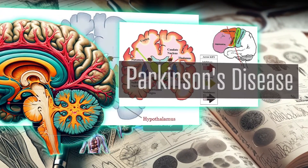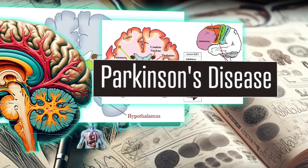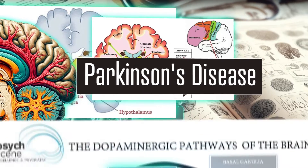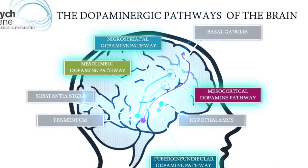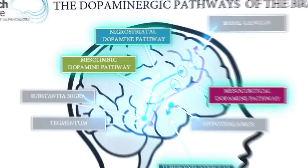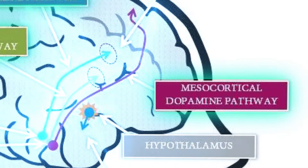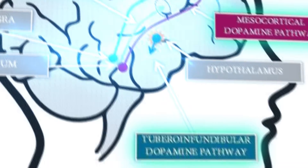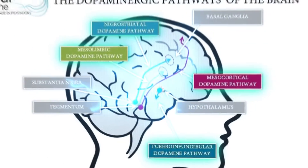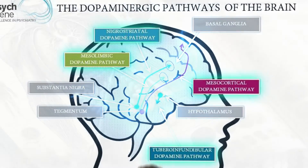Let's expand this map further. The substantia nigra is associated with Parkinson's disease, focusing on dopaminergic pathways — the mesolimbic, the mesocortical, the nigrostriatal, the tuberoinfundibular, and so on. You can see how questions can be formed on any of these different aspects.